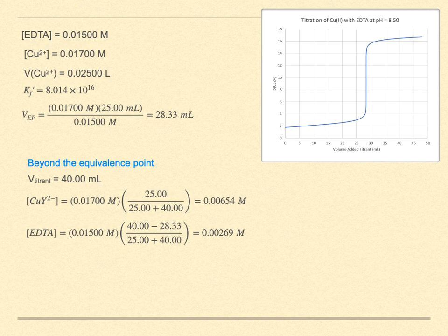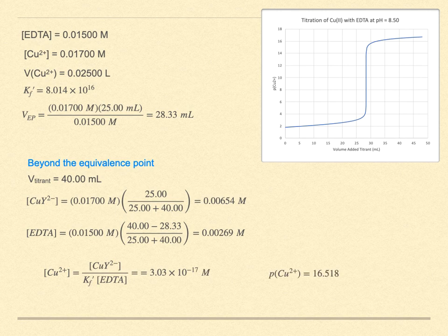With these two concentrations, it is straightforward to solve for the uncomplexed copper ion. Just rearrange the equilibrium expression. The copper concentration is 3.30 times 10 to the minus 17 molar. And p copper 2 plus is 16.518. A glance at the graph suggests we are right.